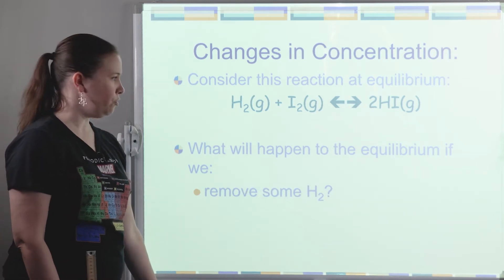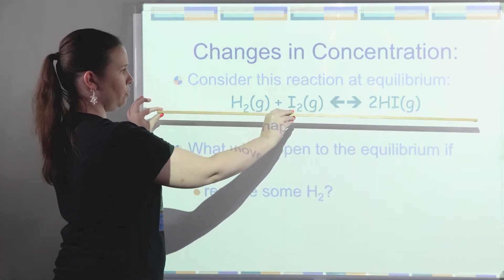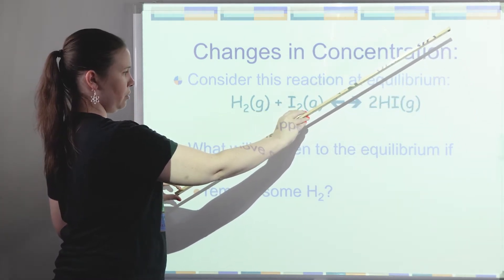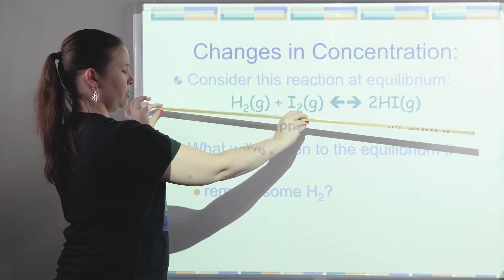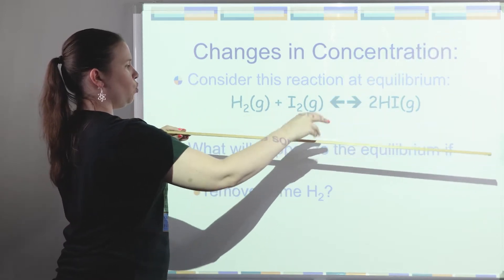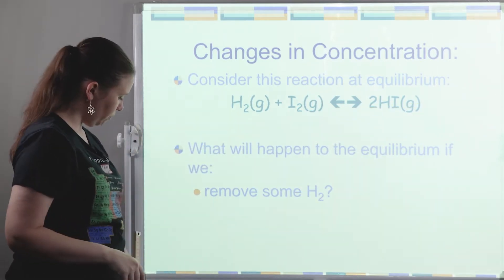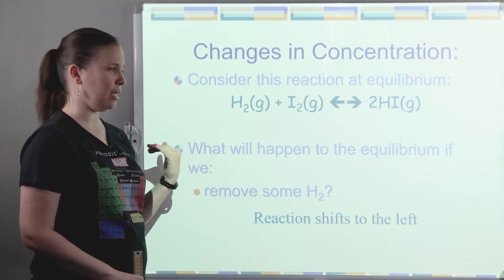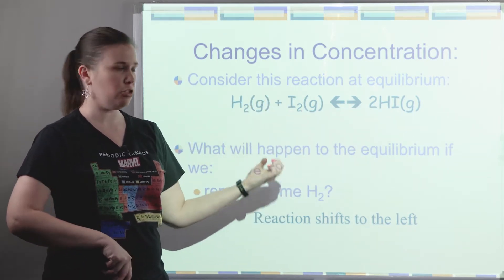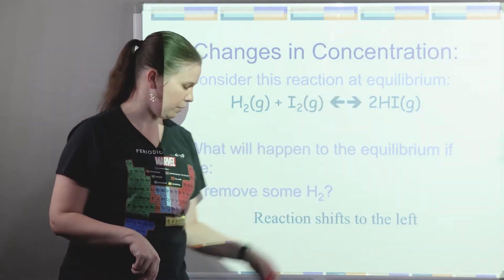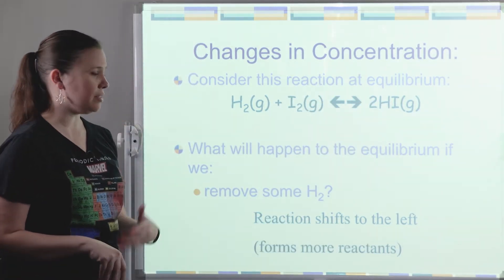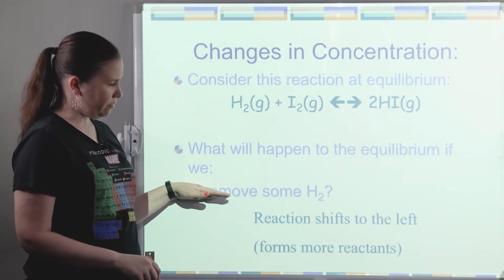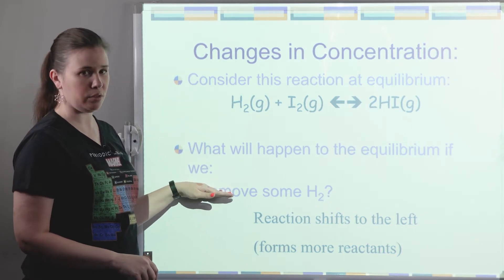What if instead we had removed H₂? Going back to our equilibrium where everything is balanced, the stress is now removing some of the reactant. The system will act to replace it — the reverse reaction would be making more H₂, shifting to the left in order to replace it. The side effects would be using up HI and making more I₂, because that's what happens in the reverse reaction. We're looking at which direction we need to shift to directly undo the stress.